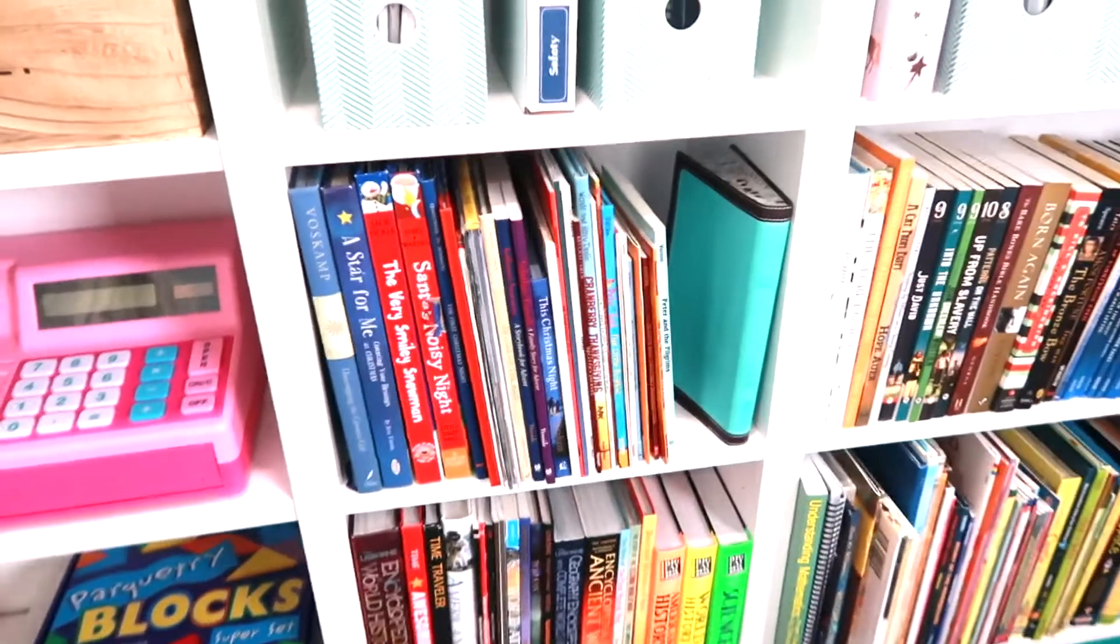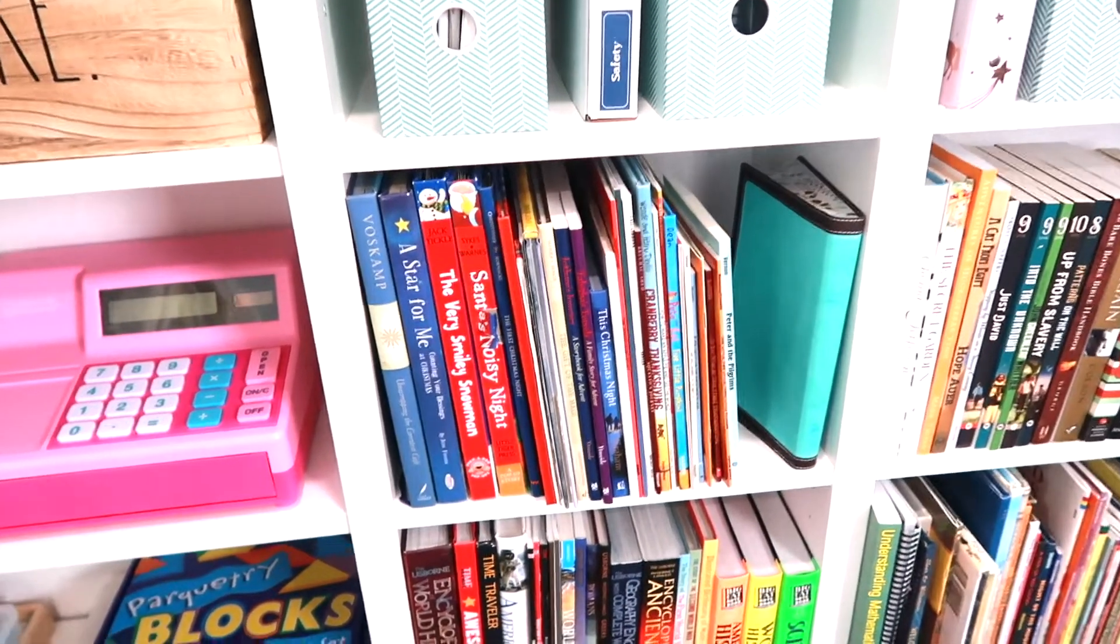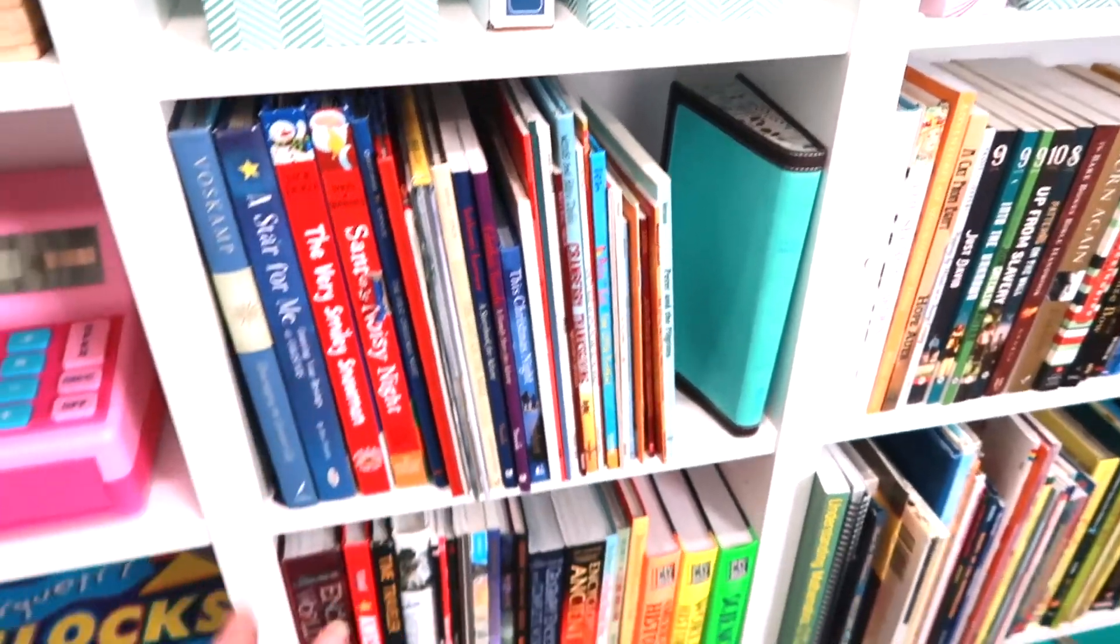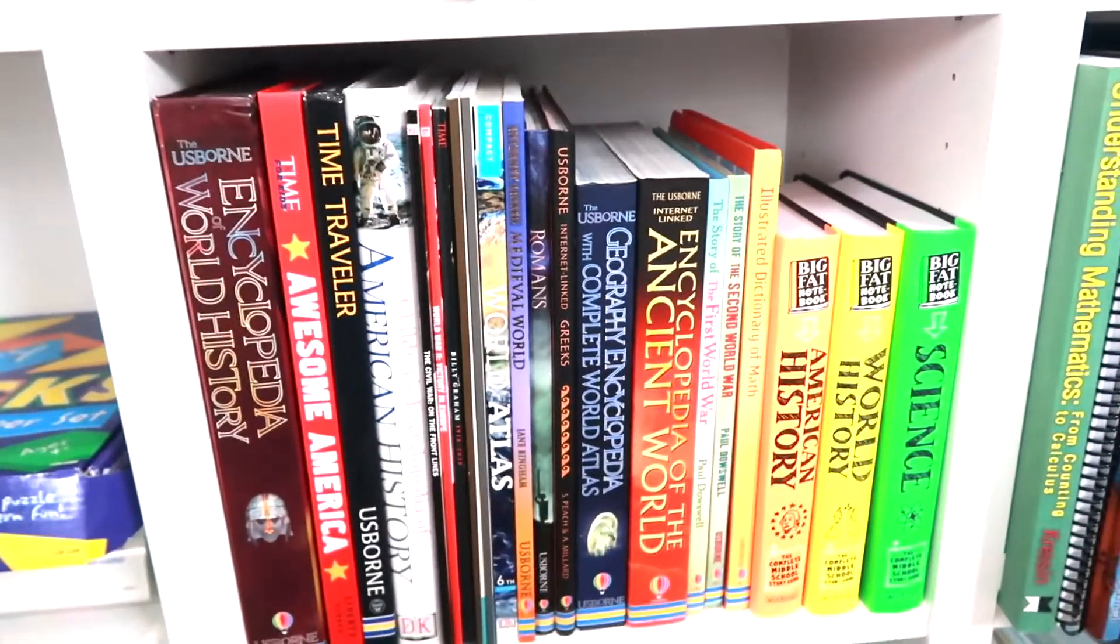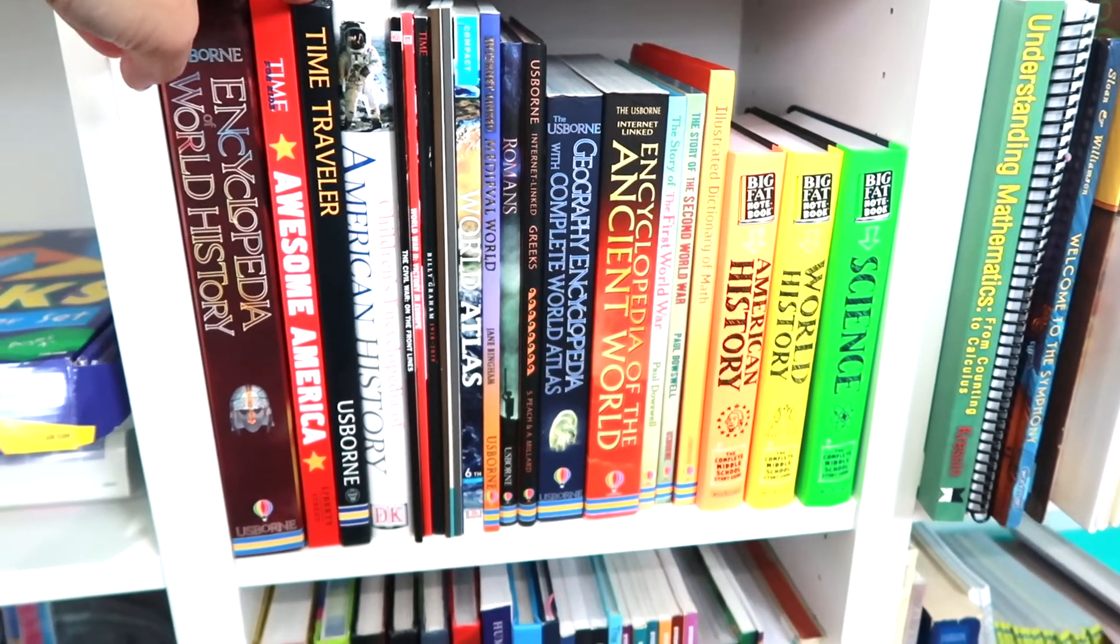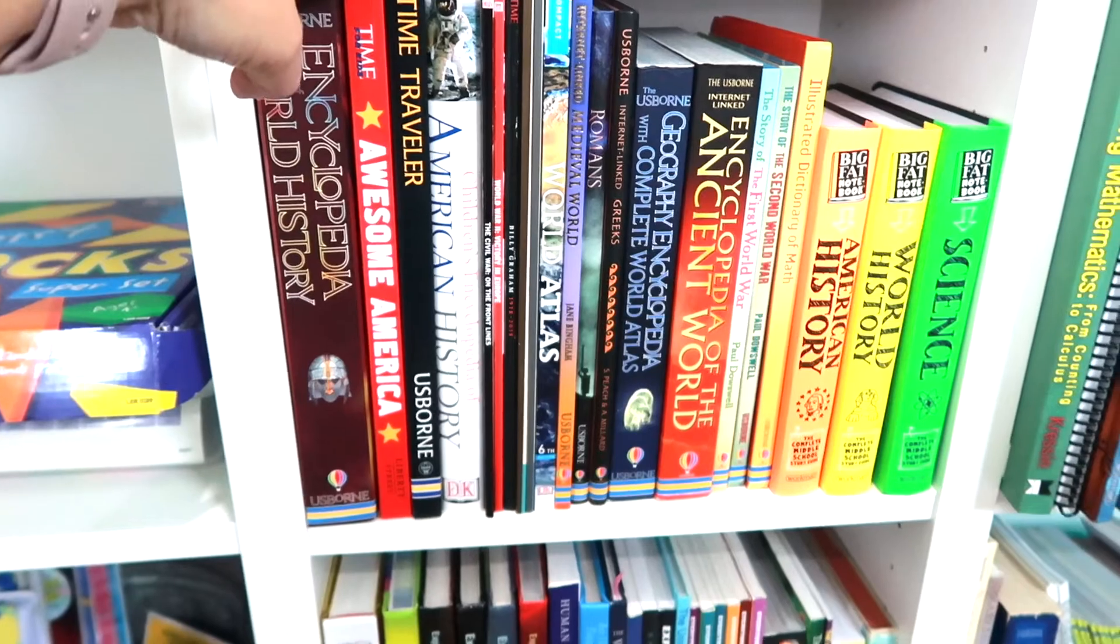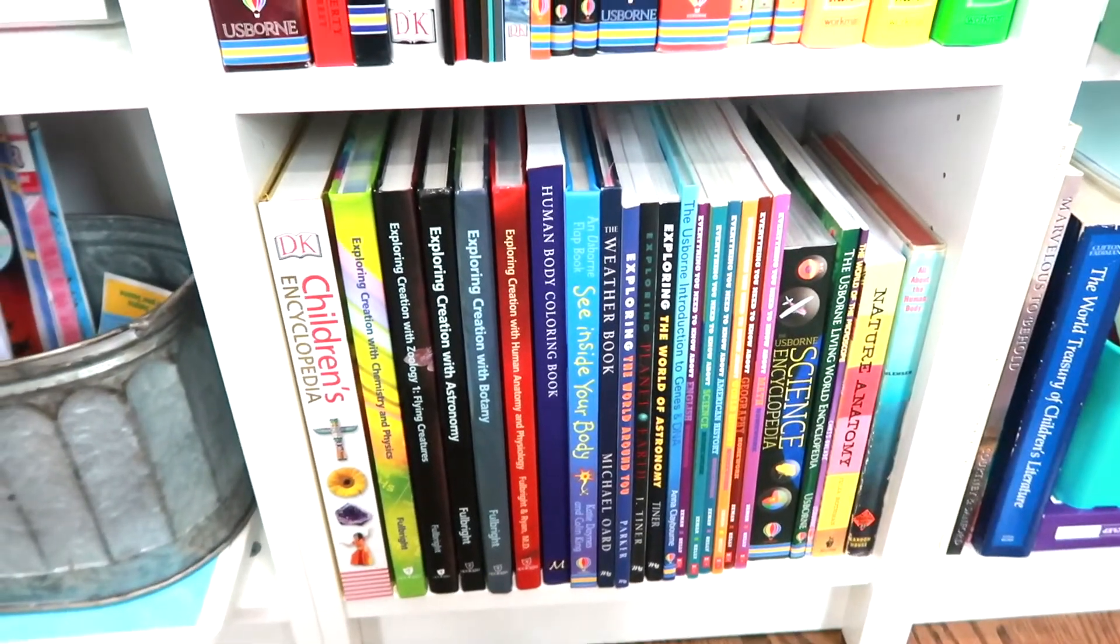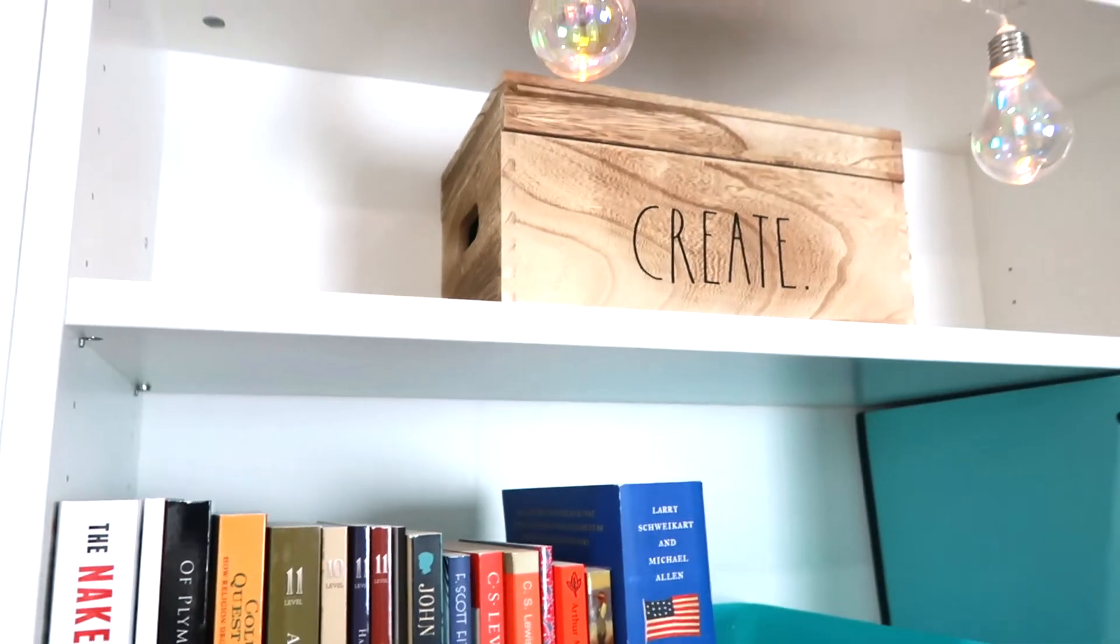I rearranged our books because I just wasn't able to find anything. This shelf is Christmas and Thanksgiving books, like holiday books. This shelf here has references that we have, primarily the ones on this shelf are history and geography. On the bottom shelf I also have references but those are primarily science.